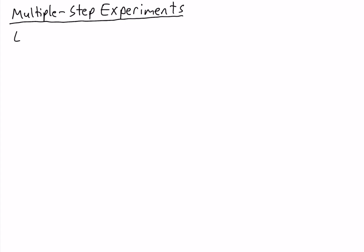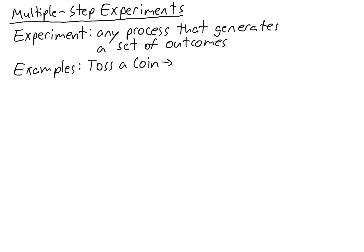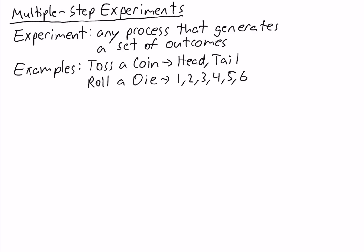Previously we defined an experiment as any process that generates a set of outcomes. We gave two examples: tossing a coin is an experiment because it gives the outcomes head and tail, and rolling a die is an experiment because it gives the outcomes 1 through 6.